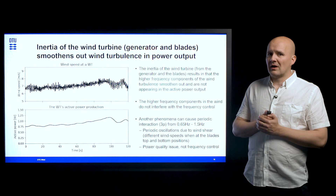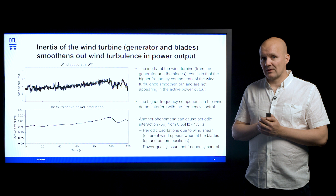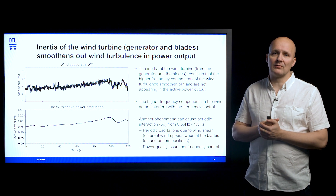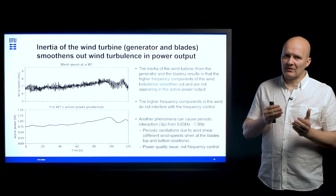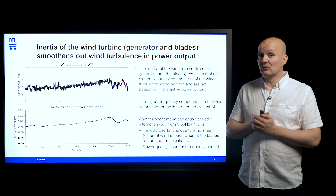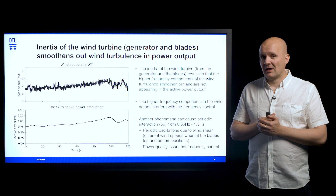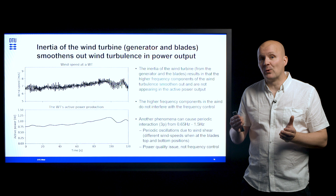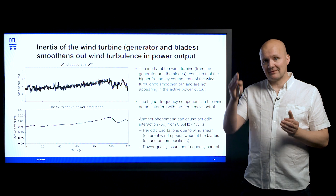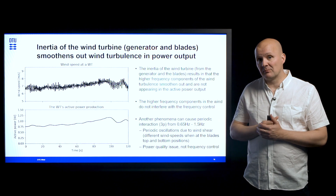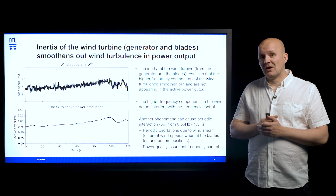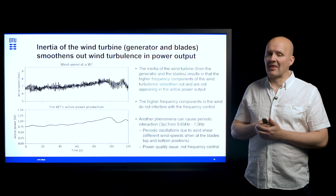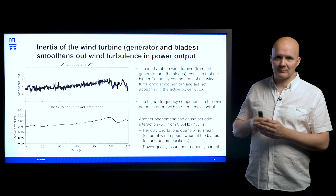There is another phenomenon that can occur and cause periodic interactions — the so-called 3P oscillations, which can range from 0.65 to 1.5 Hz. These are periodic oscillations due to wind shear; that is, you can have different wind speeds when the blade is in its top position versus its bottom position. This is, however, not an issue for frequency or frequency control — it is rather a power quality issue and is addressed by other means.